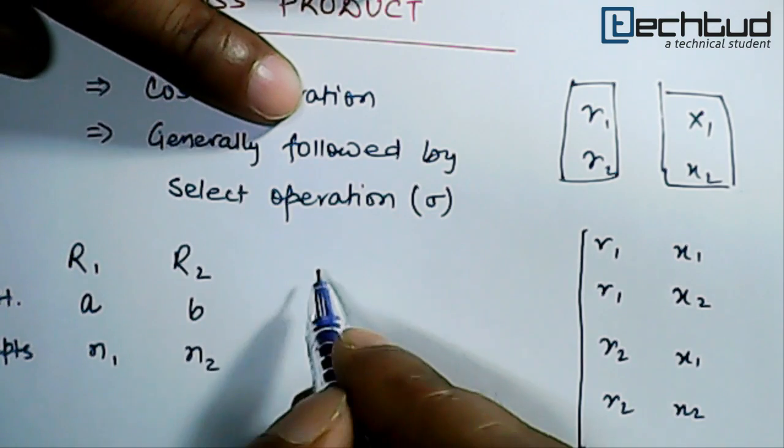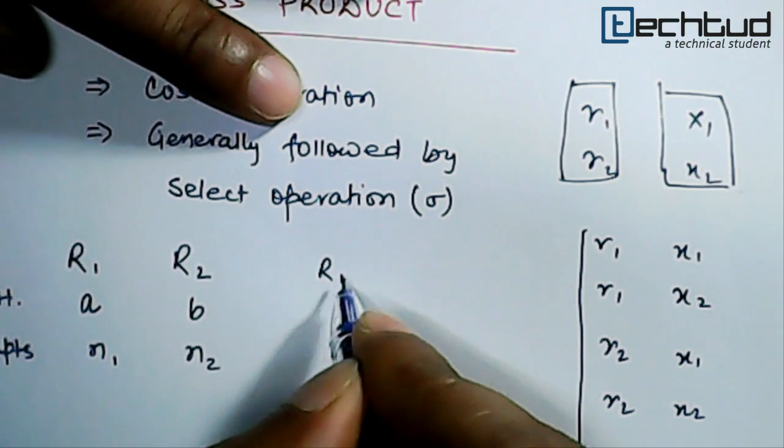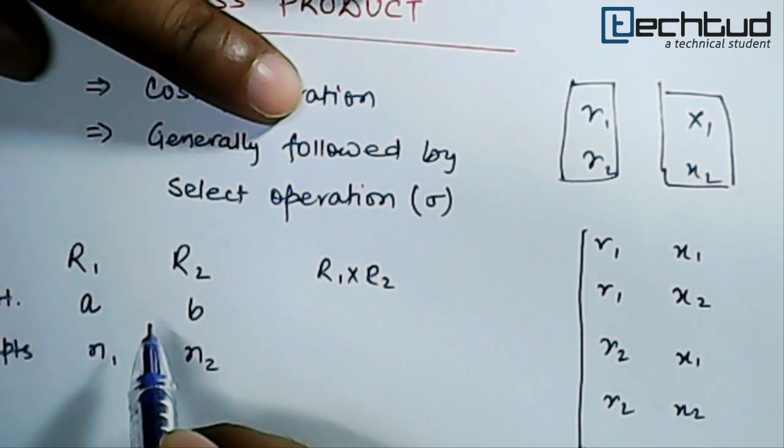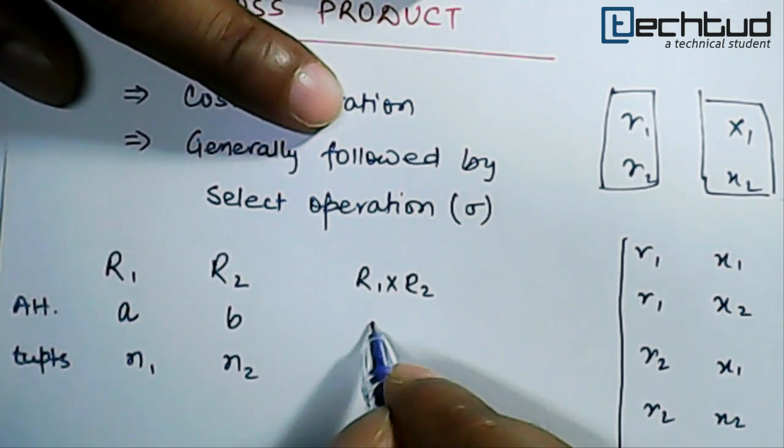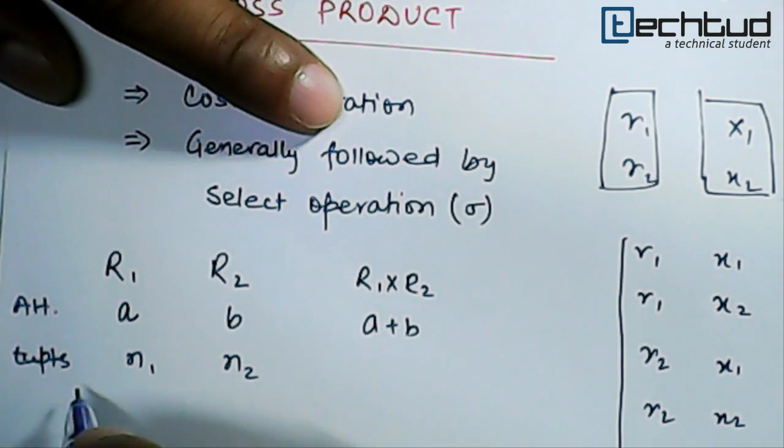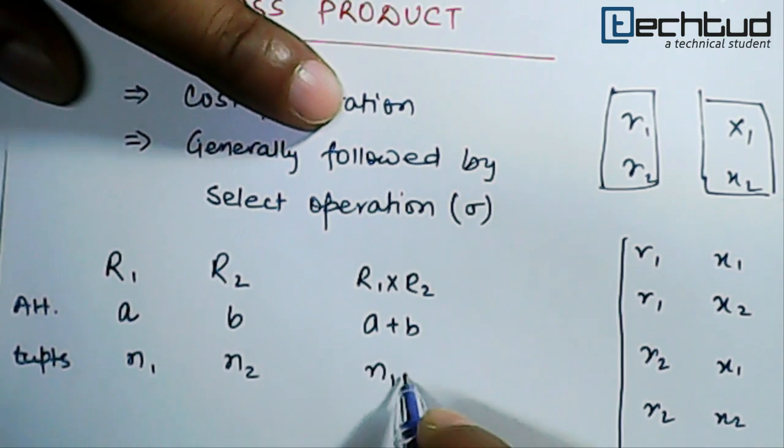Then in this case, what will be the resultant, that is R1 cross R2, what will be the resultant number of attributes? The number of attributes will be a plus b, and the number of tuples will be n1 cross n2, n1 into n2.